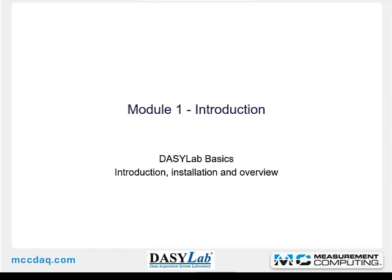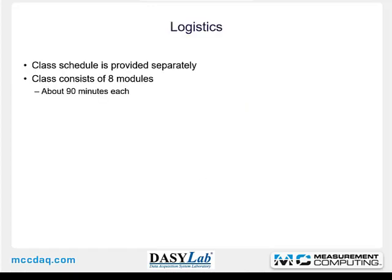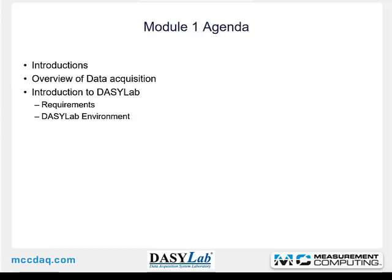Module 1 is the Introduction, Installation, and Overview. When giving the class in person, this is a lot of talk before hands-on. Each class consists of eight modules, about 90 minutes each in person — right now they're running about an hour each. The agenda for Module 1 is a brief introduction, an overview of data acquisition, and then the introduction to DAISYLAB with its requirements and its environment. Think of Module 1 as vocabulary — introducing you to the concepts of the program without actually doing anything.